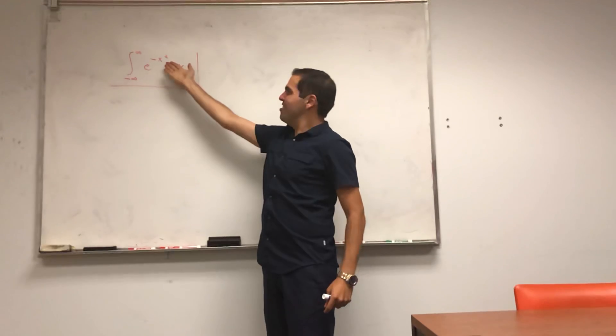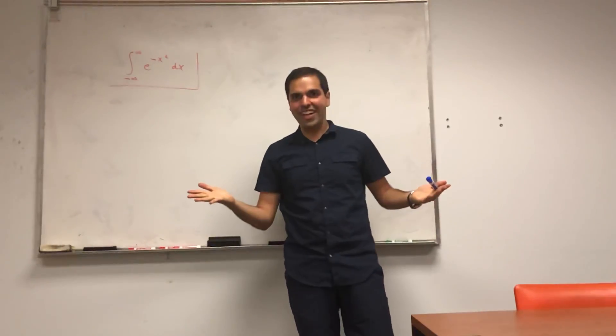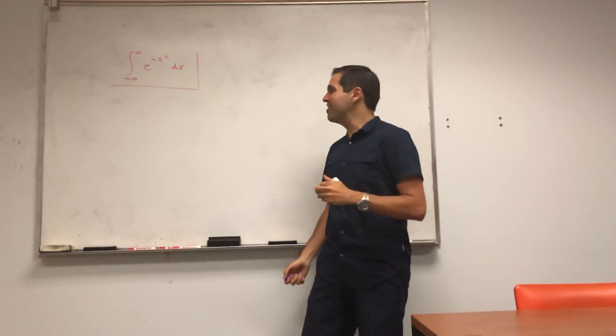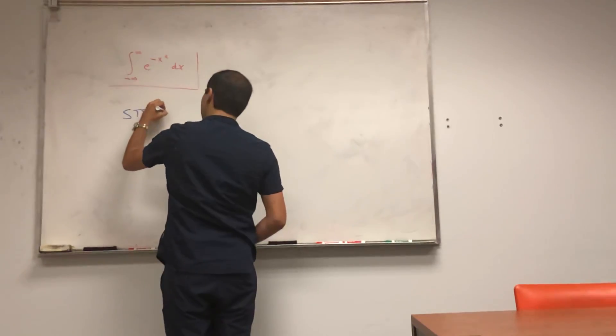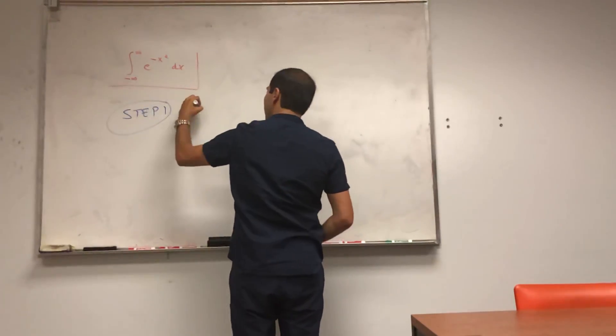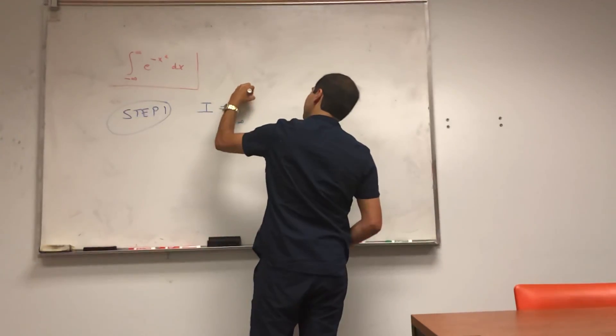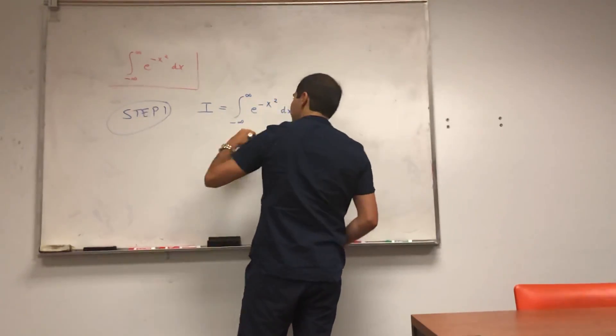So we want to evaluate this integral, which is impossible to evaluate, yet using multivariable calculus we can do this using a very neat trick. Step one: let I be the integral from -∞ to ∞ of e^(-x²)dx.